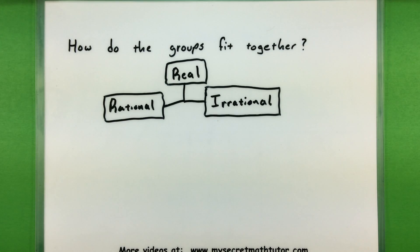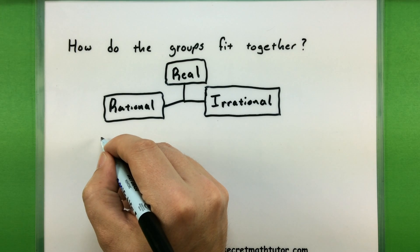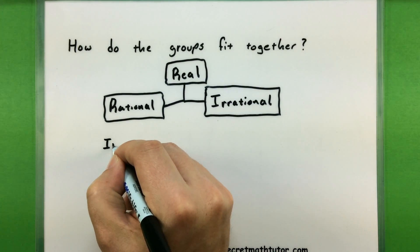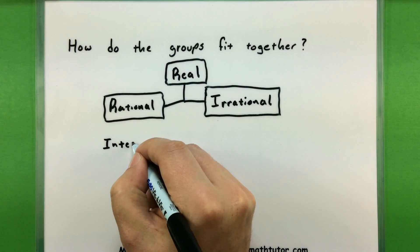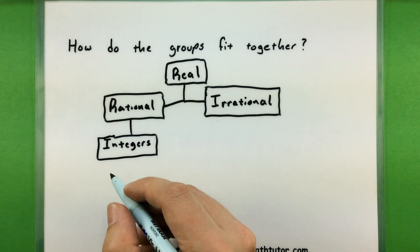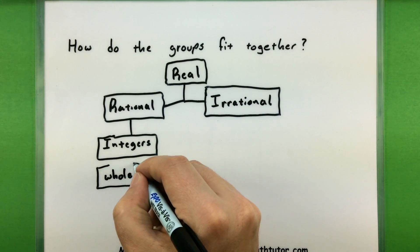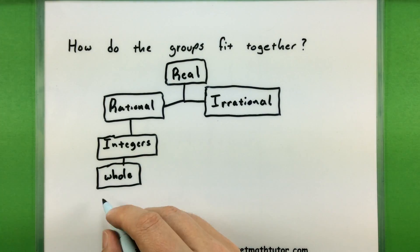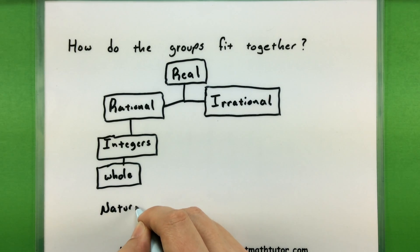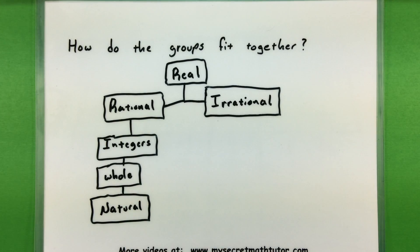For the rational group, here's where you can break it down even further. Within the rational numbers, you have your integers, you also have your whole numbers, and you have your natural numbers. The important thing with this diagram is that if a number is in a group, it's also in the groups connected above it.